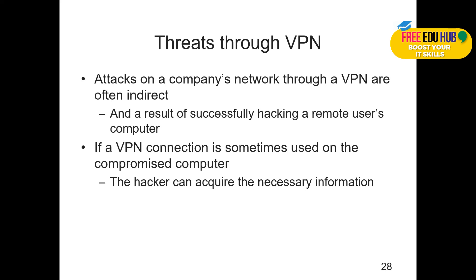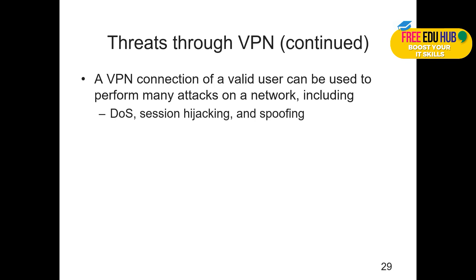Attacks on a company's network through a VPN are often indirect — if a user's username and password is compromised, anyone can use those credentials to access the corporate network. There are always multiple layers of protection, like 2FA using Google Authenticator, where a code is sent via SMS or generated by an application and must be entered before the user is authenticated. A VPN connection of a valid user can be used to perform attacks including denial of service, session hijacking, and spoofing.